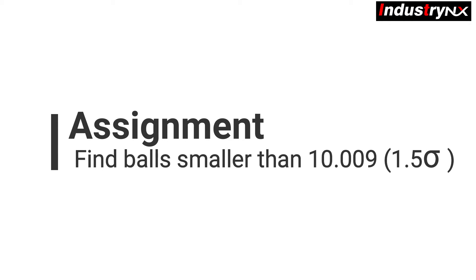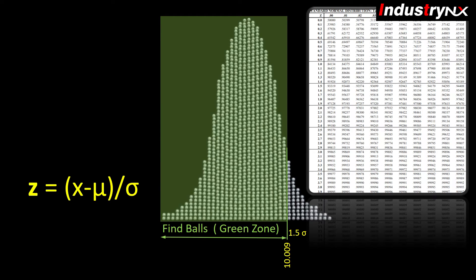To clear your concept, take a small assignment to find out number of balls on left hand side of 10.009, that is 1.5 sigma. Let us pause the video now and calculate answer yourself and come back to check results.